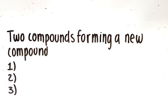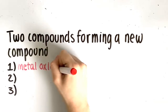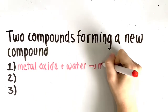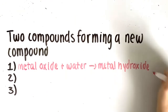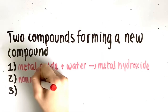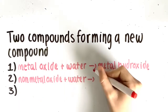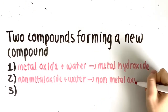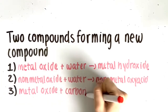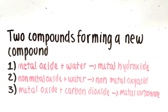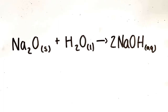Finally, two compounds forming a new compound. There are three different ways this can occur: a metal oxide plus water yields a metal hydroxide, a nonmetal oxide plus water yields a nonmetal oxy acid, and a metal oxide plus carbon dioxide yields a metal carbonate.